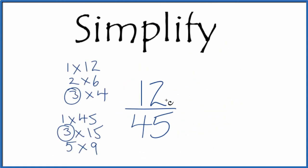When we divide 12 by three, we'll get four. And then when we divide 45 by three, we end up with 15.